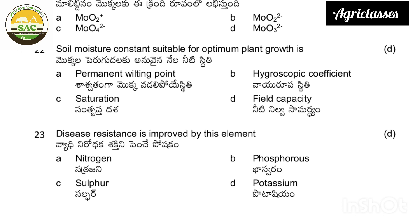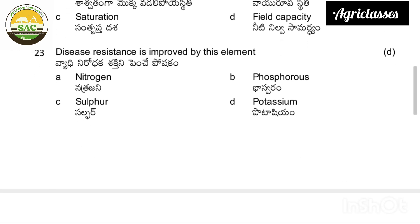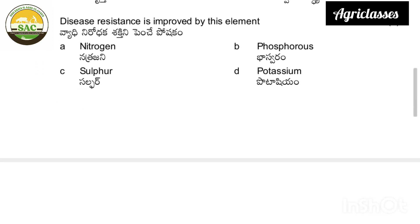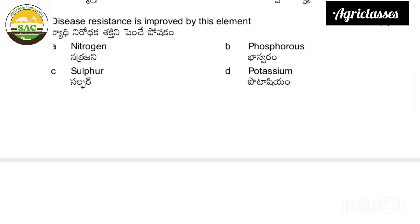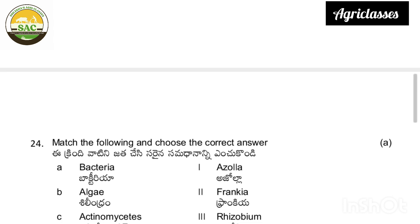Disease resistance is improved by — nitrogen, phosphorus, sulfur, or potassium. The correct answer is potassium. Nitrogen is for vegetative growth, phosphorus for root growth, sulfur for seed and oil development, and potassium imparts disease resistance in plants.